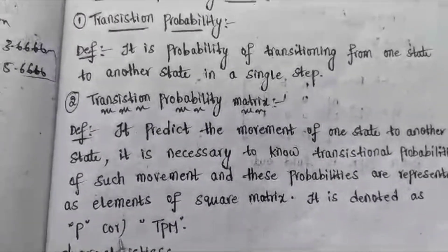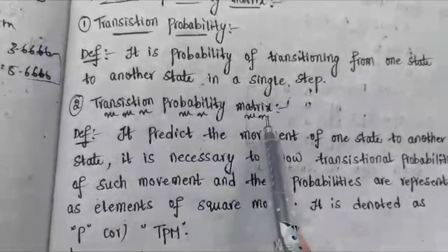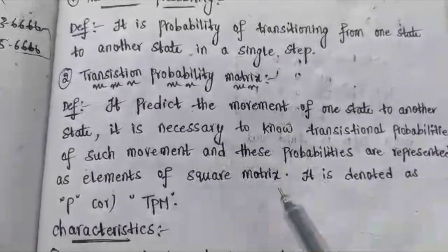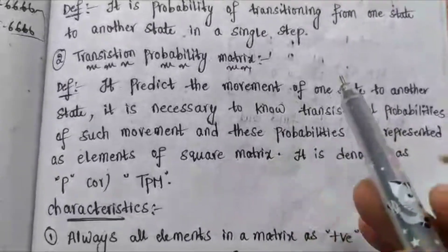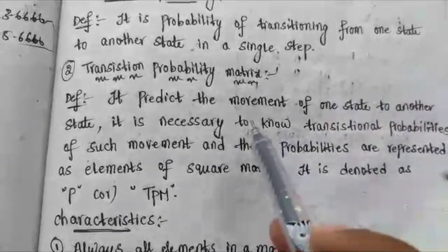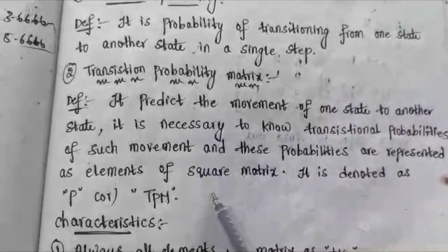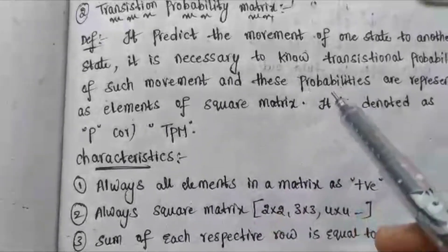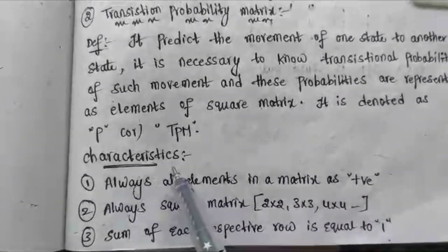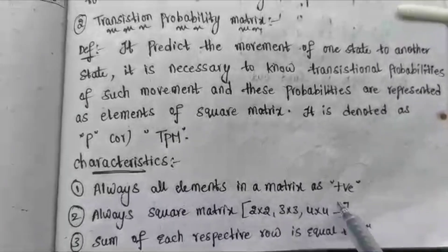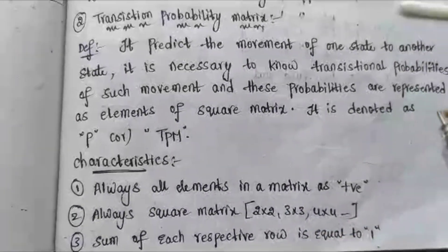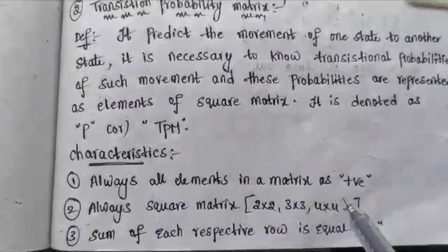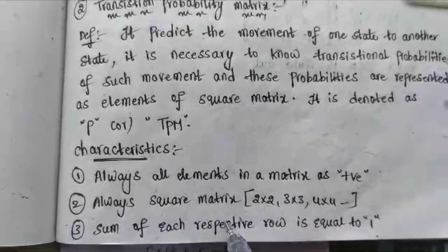The TPM, or Transition Probability Matrix, is denoted as capital P. In the matrix, elements represent the probability of changing from one state to another, and these changes are predicted as elements of a square matrix. The characteristics of a TPM must all be valid for a given matrix to be called a Transition Probability Matrix. The first characteristic is that all elements in the matrix must be positive — any negative element violates and invalidates it. The second characteristic is that it must always be a square matrix, such as 2×2, 3×3, or 4×4.